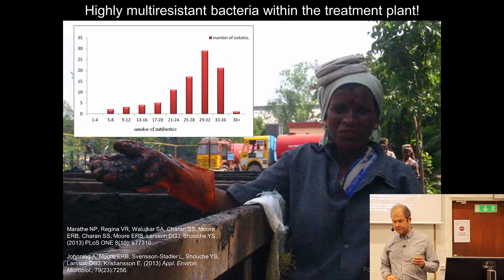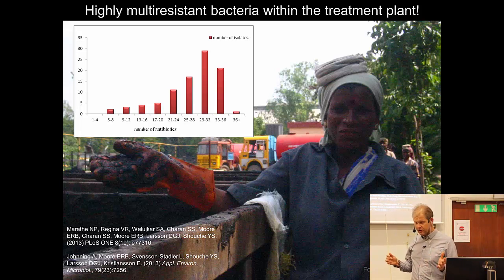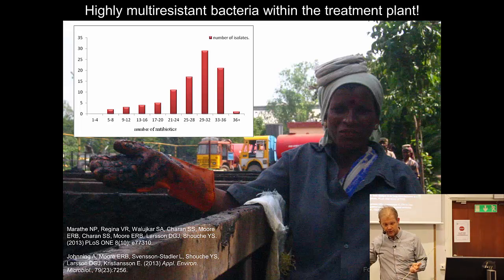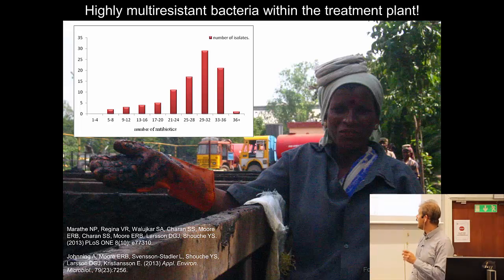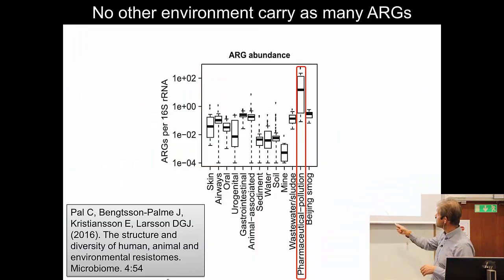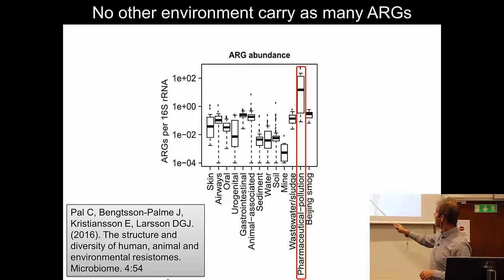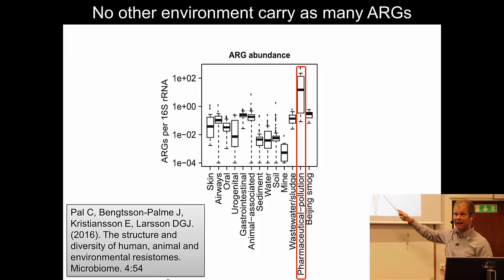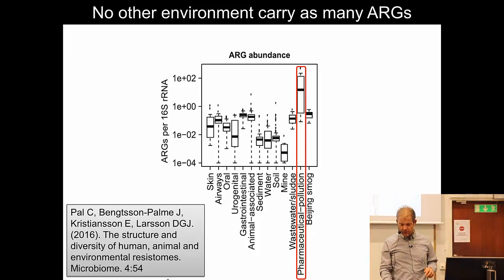We've also done a comparison of the number of resistance genes in these polluted environments and downstream polluted environments compared to other environments. This shows how many resistance genes there are basically per bacterium. These are from human samples, some environmental samples, and here are the numbers near these manufacturing sites — far, far more: two orders of magnitude more than any other place on Earth, basically. So there is an extreme selection pressure for antibiotics.